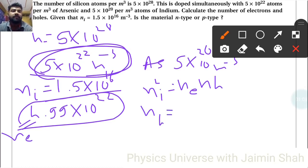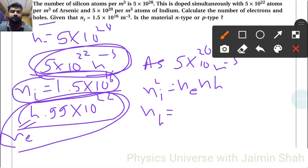We found electrons by subtracting. So nh = ni², which is 1.5×10¹⁶ squared, divided by ne.